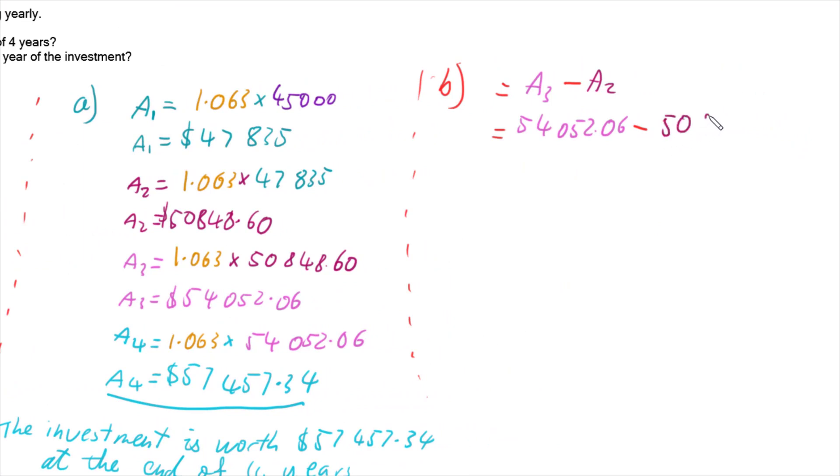And we're going to minus off the end of our second year's amount, $50,848.60. And so that would give us $3,203.46. So there is $3,203.46 gained in the third year.